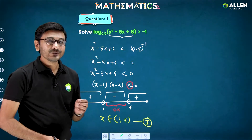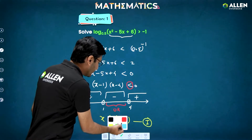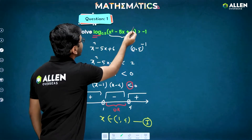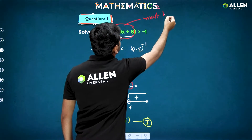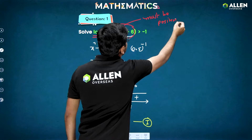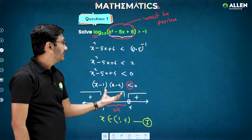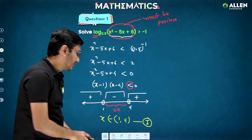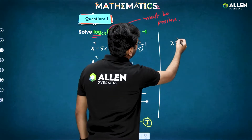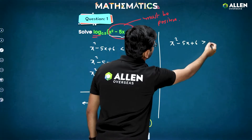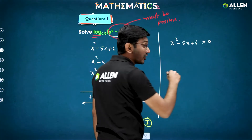But is (1, 4) the final solution? No — within (1, 4) some x values may make x² − 5x + 6 negative. Since we are computing log of (x² − 5x + 6), this input must be strictly positive. We need to find which x values between 1 and 4 make it negative, and exclude those.